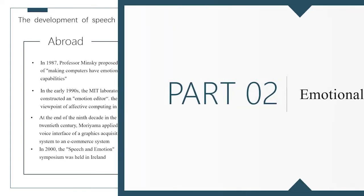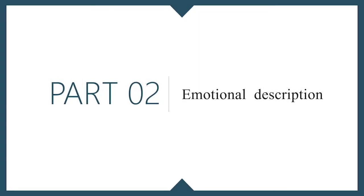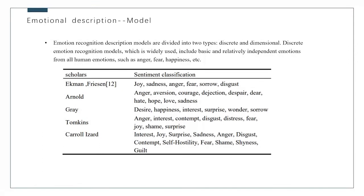Secondly, I would like to introduce the emotion description models in our paper. Emotion recognition description models are developed into two types: discrete and dimensional. Discrete emotion recognition models include basic and categorical types, identifying independent emotions from all human emotions, such as angry, fear, happiness, and sadness.